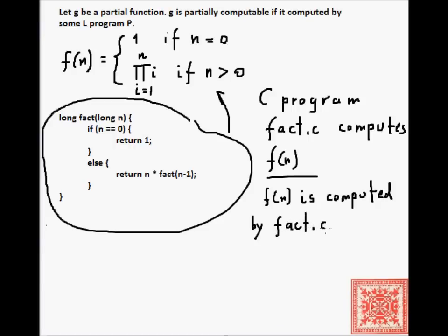So if we use psi notation that we've defined in the previous screencast on this subject, psi of fact.c of one argument n is equal to f(n).